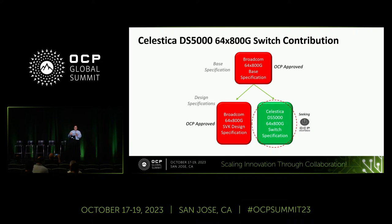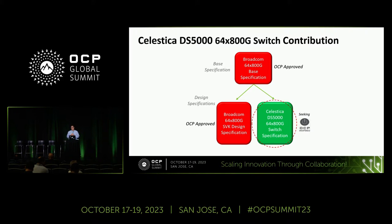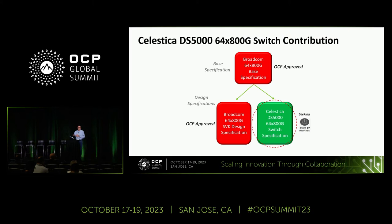The process of this contribution follows the new OCP contribution process discussed earlier. Previously, it was a very monolithic process where one specification defined everything from high-level requirements down to schematics and Gerber files. We've revamped that into a three-tiered process: the top level is called a base specification, which states general product requirements; the second is a design specification with more detail; and the third level is the product contribution, including design files to recreate the hardware.